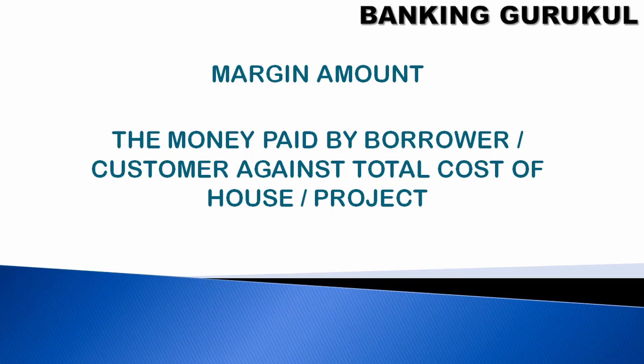When you approach the bank, the bank will verify your pay slip, your income source, your monthly income, your take-home — everything they will verify. Then they will say you are eligible for 50 lakhs, but the bank says: I'll give you a 50 lakh loan, but 20% margin will be yours — meaning 20% you have to pay.